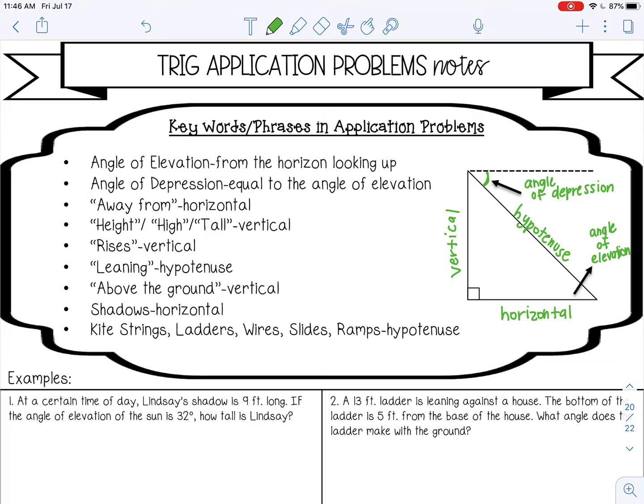So angle of elevation is the first word. It's here. And then the angle of depression is at the top. But something that's important to know is that the angle of depression is equal to the angle of elevation because these are actually alternate interior angles. So they will always be the same.